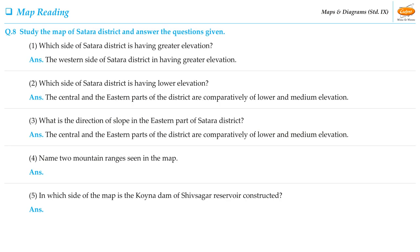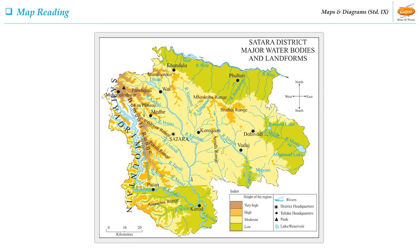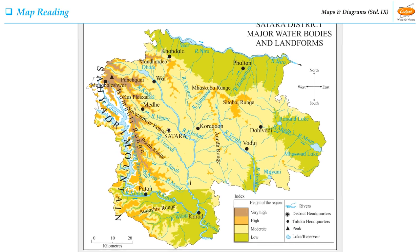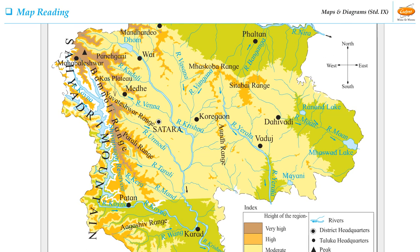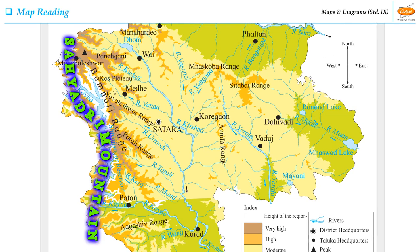Let us move on to the fourth question of this activity: Name two mountain ranges seen in the map. The two mountain ranges seen in the map are Sahyadari Mountains and Bamnori Range.